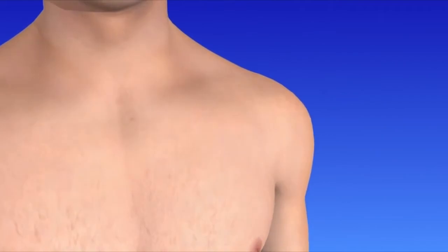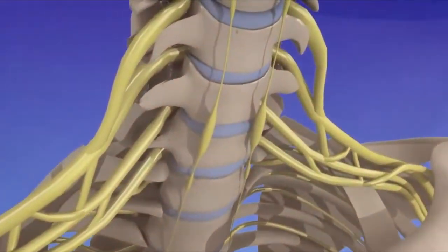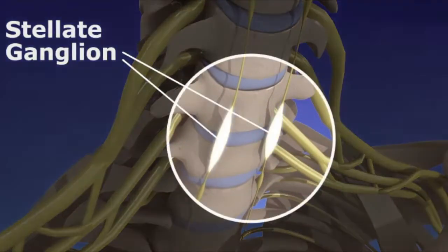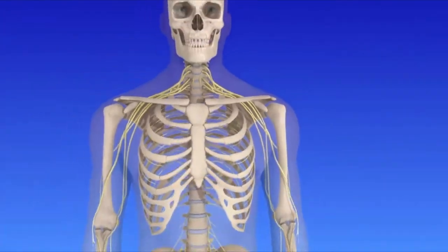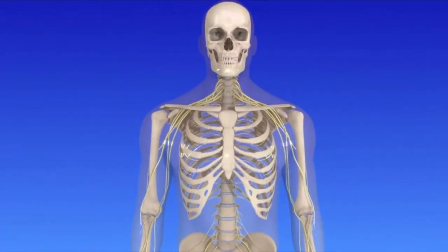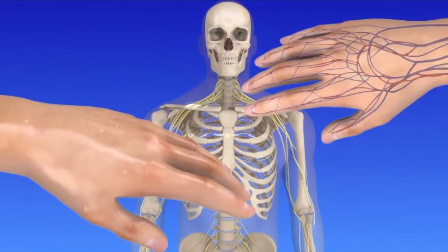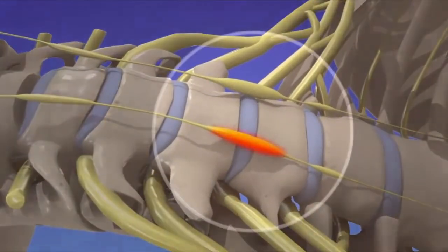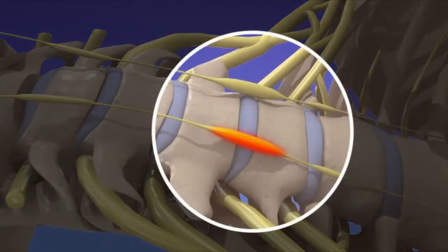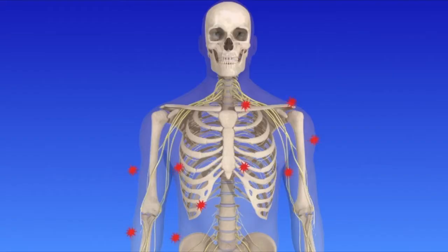A stellate ganglion block is used as a diagnostic or pain-relieving procedure. The stellate ganglion is a group of nerves located at the base of the front of the neck. These nerves carry signals about pain in the head, neck, upper chest, and arms, and regulate functions you cannot control such as sweating and blood flow. A stellate ganglion block can be a helpful treatment for people with pain from certain nerve conditions such as complex regional pain syndrome, phantom limb pain, and shingles or herpes zoster in the arm, head, or face.